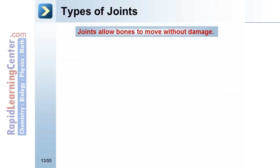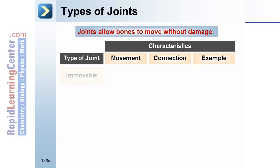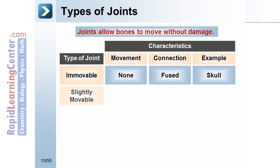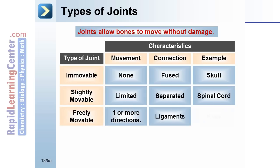Types of joints: joints allow bones to move without damage. An immovable joint has no movement; the connection is fused, and an example is the skull. A slightly movable joint has limited movement; the connection is separated, and an example is the spinal cord. A freely movable joint allows movement in one or more directions; the connection is via ligaments, and an example is the knee.